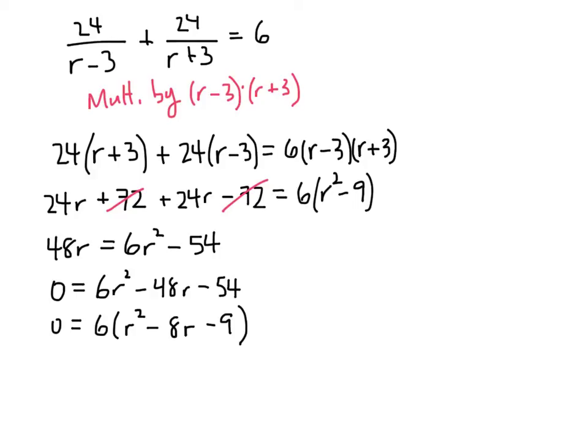And now r squared minus 8r minus 9, that does factor. We're looking for two numbers that multiply together to give us minus 9 and add together to give us minus 8. And the numbers we're looking for are negative 9 and positive 1.